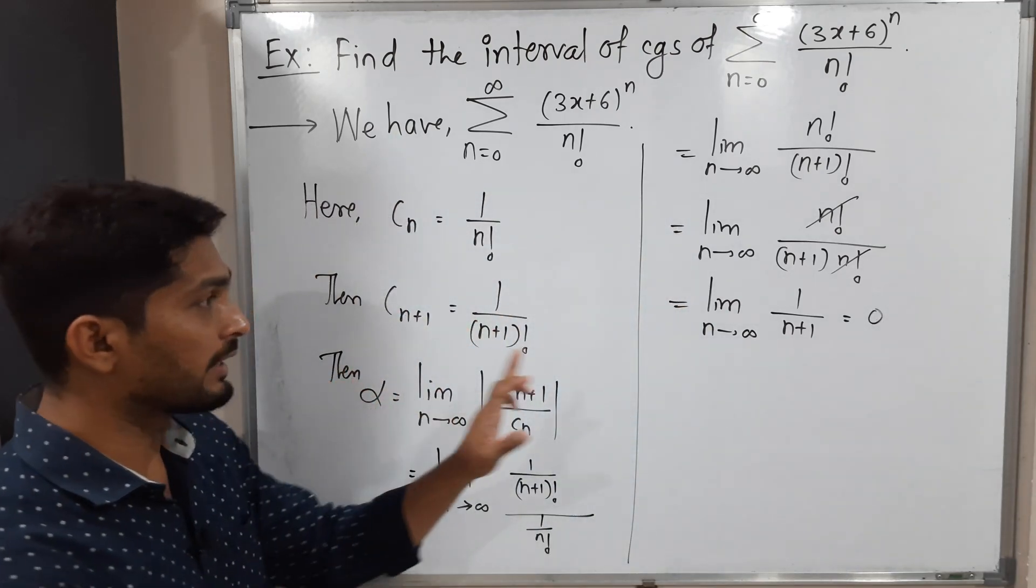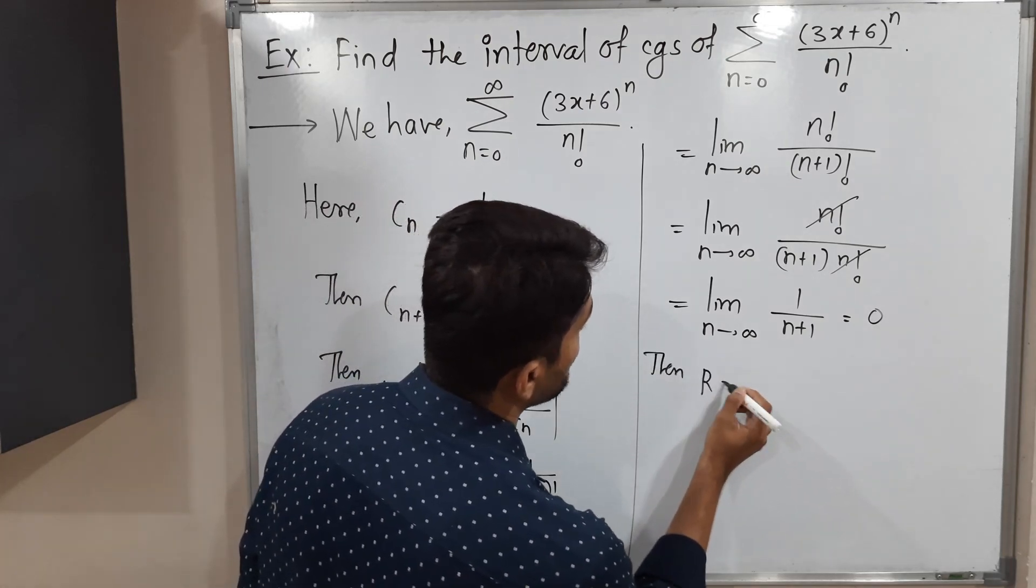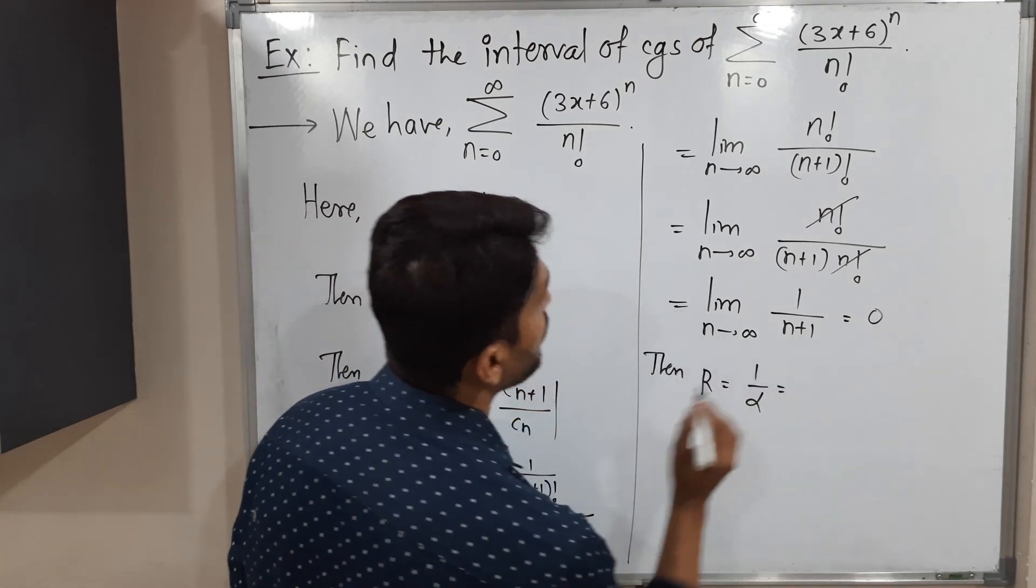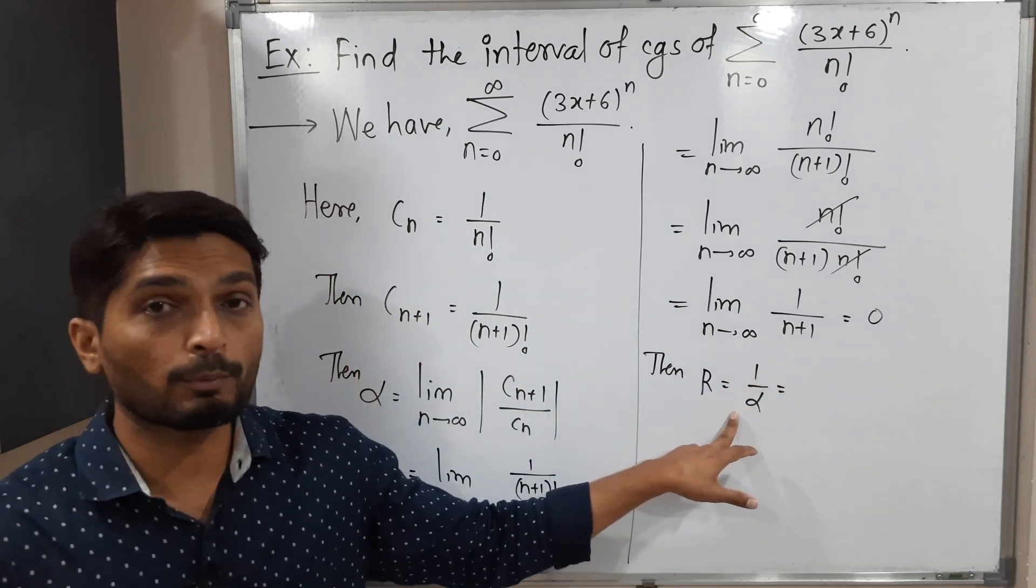Then let us find the radius of convergence, which is the reciprocal of alpha. But see, the value of alpha is 0. That means I should write 1 upon 0. 1 upon 0 is infinity. So the radius of convergence is infinity.